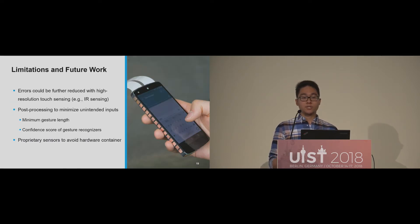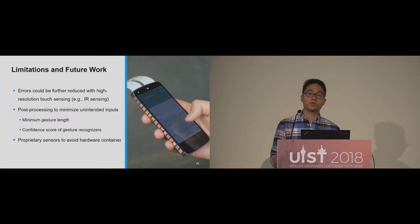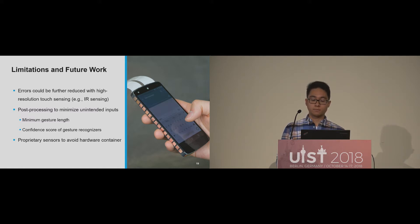Future work could improve our results by using other touch sensing techniques to get a higher resolution touch image. In contrast to the space-saving capacitive touch screen, infrared sensing or frustrated total internal reflection would provide higher-resolution images for model training. Unintended activations in our use cases could also be minimized by post-processing the estimated positions. For the finger-specific gestures example, we could use a threshold for a minimum gesture length or the confidence score of gesture recognizers to compensate for wrong estimations. For the action modifier use case, we could display the action state on the front screen so users are aware of what will be done next.